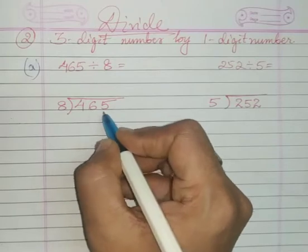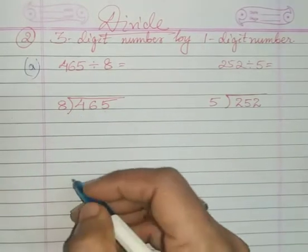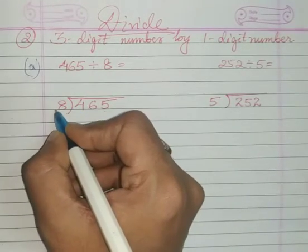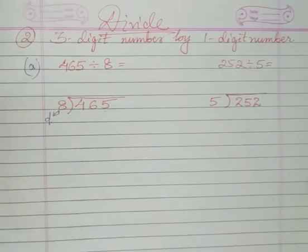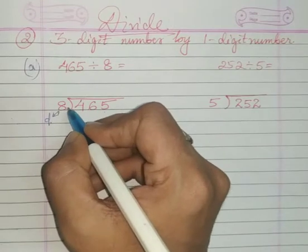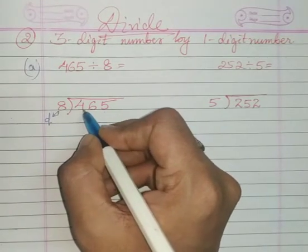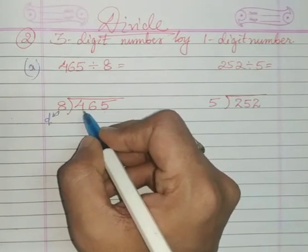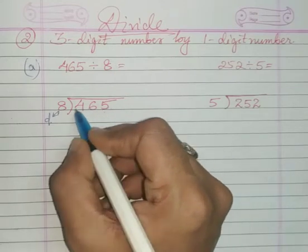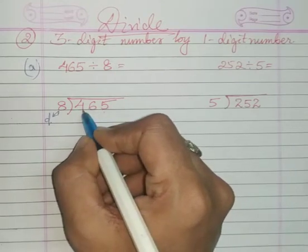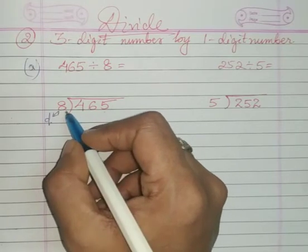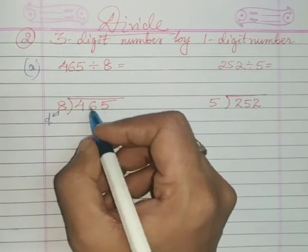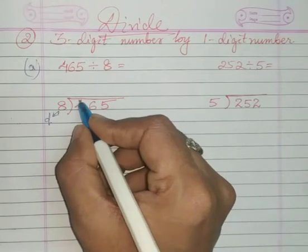For example, 465 divided by 8. Now I have to look for the multiplication table of 8, that is divisor 8. Now come to the first number or digit of the dividend, it is 4. 4 is less than 8, so we cannot divide.